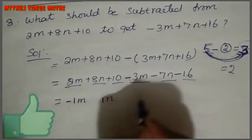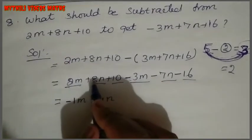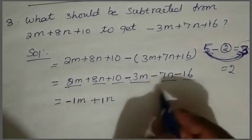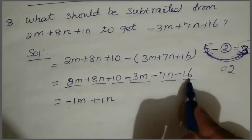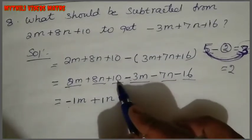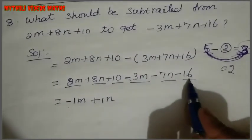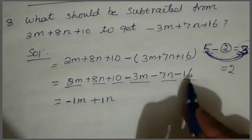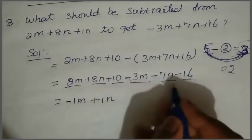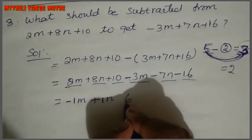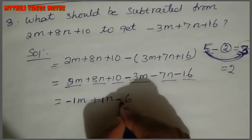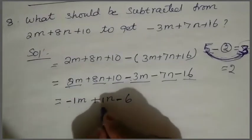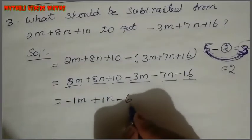So we get 1n. The bigger number symbol is plus 1n. And then the next step is the last two numbers: 10 and minus 16. Now we have a bigger number and a smaller number with different symbols, so we get 10 plus 6, giving us minus 1n plus 1n minus 6.